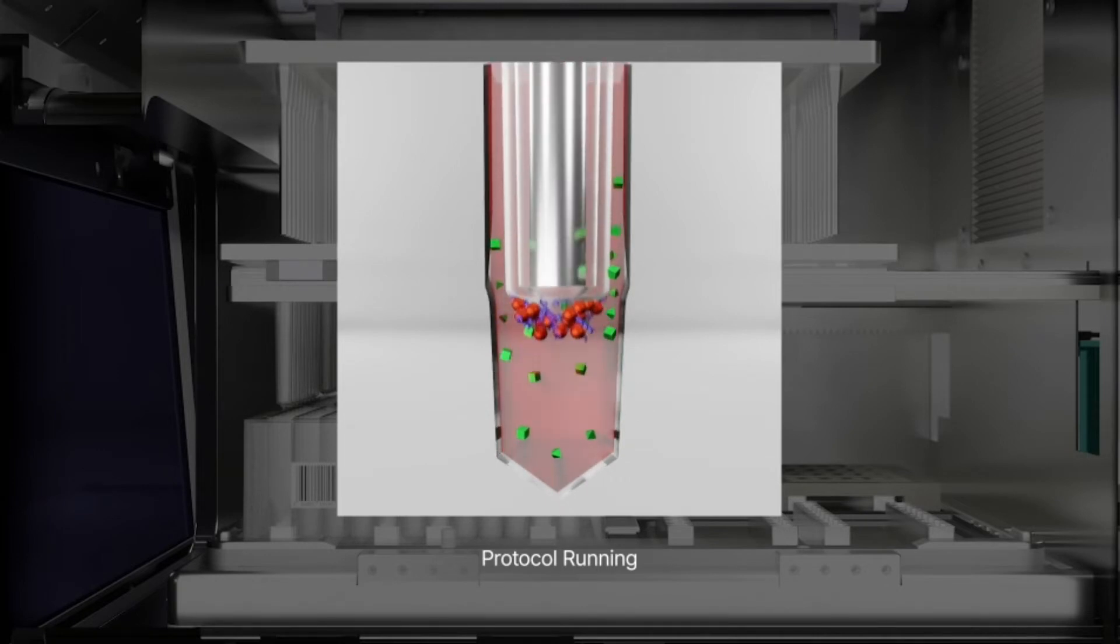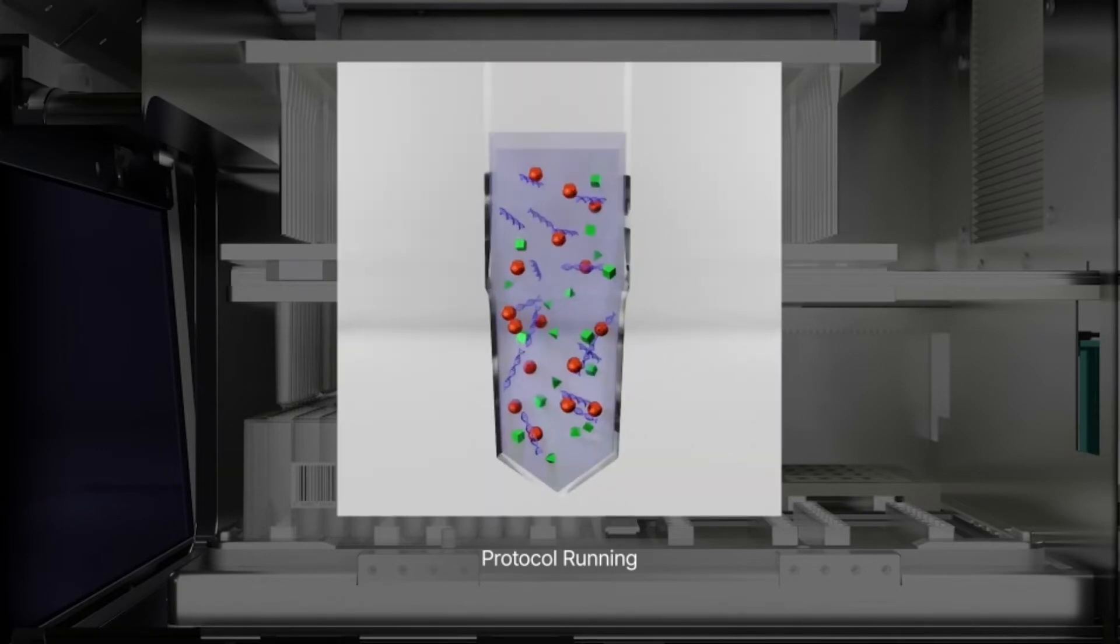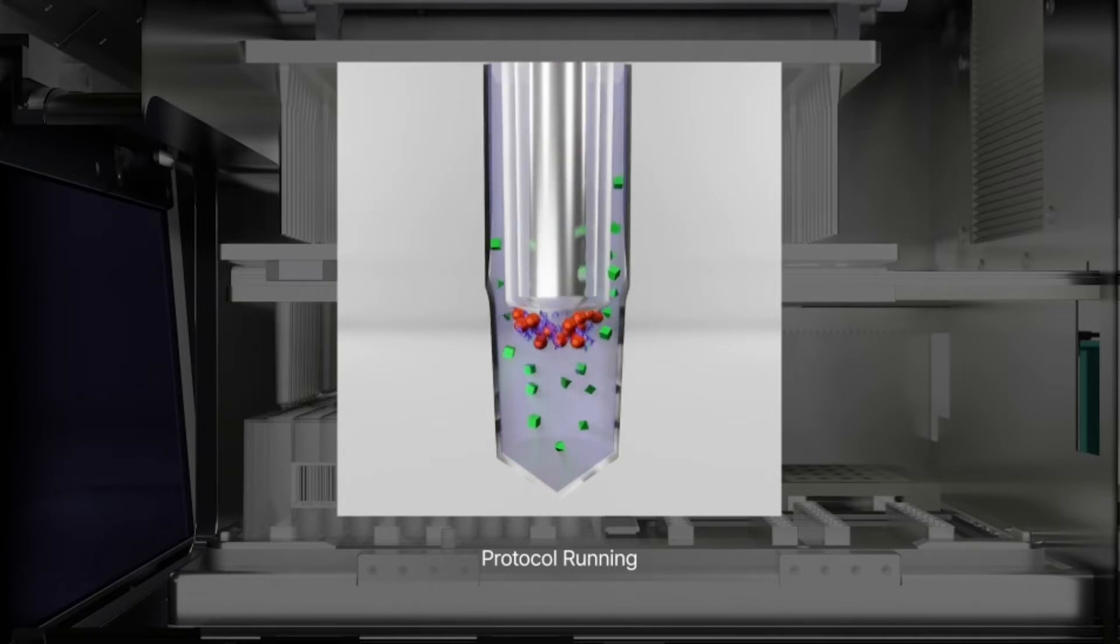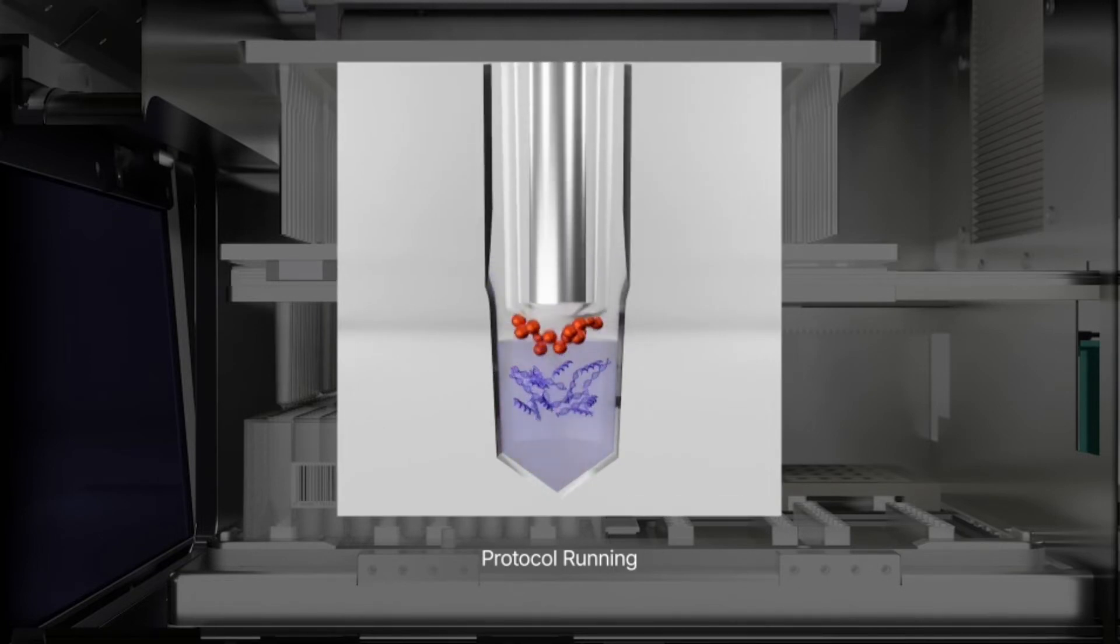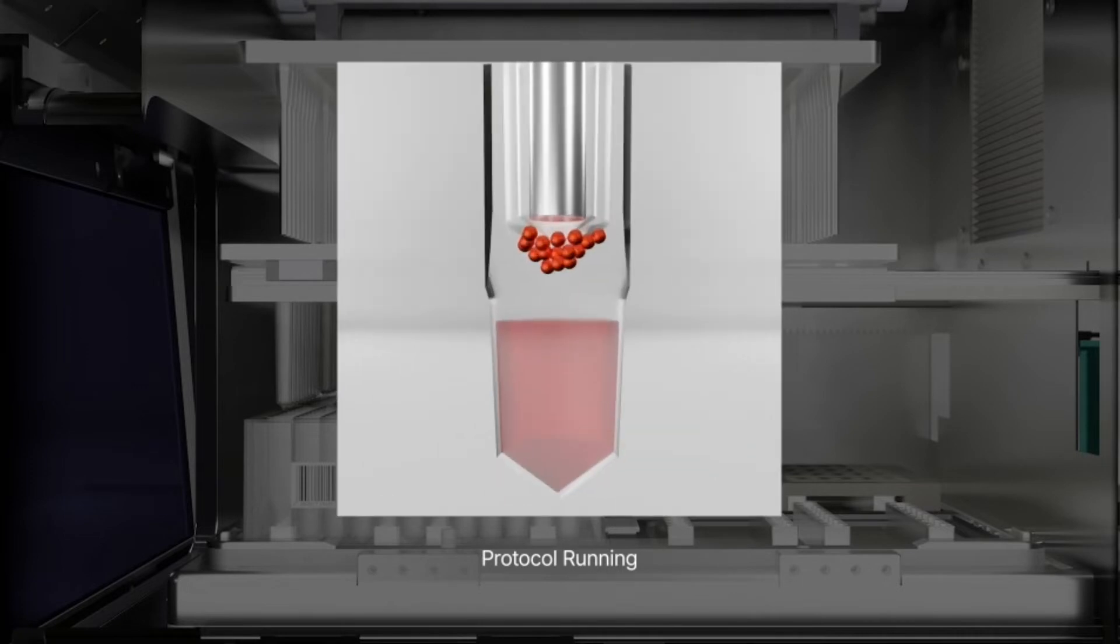It uses magnetic rods to move magnetic particles through the extraction phases of lysis, binding, washing, and dilution. The extracted eluent is recovered in high yield and purity, ready for use in downstream applications including PCR and real-time PCR.